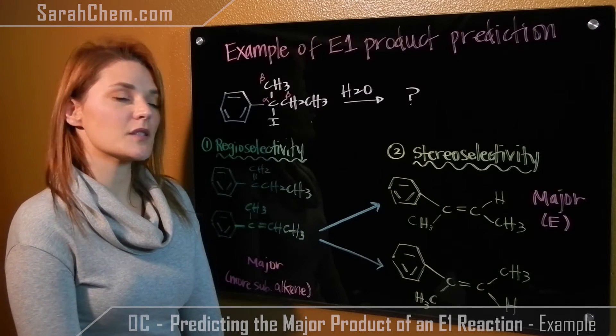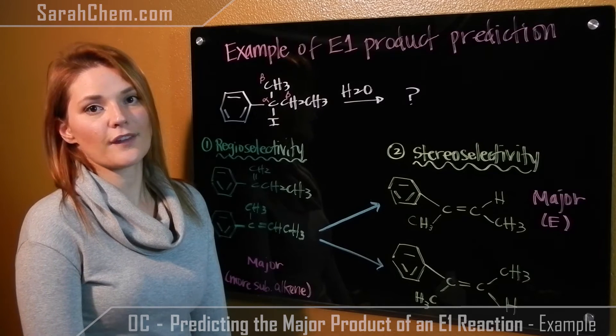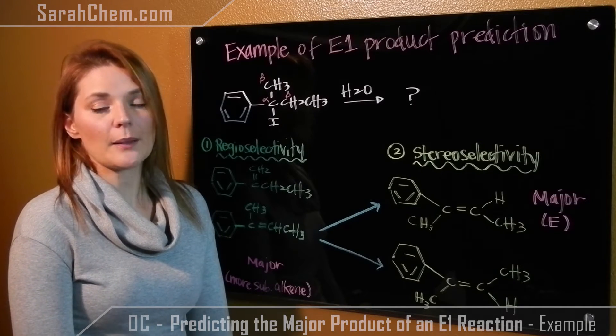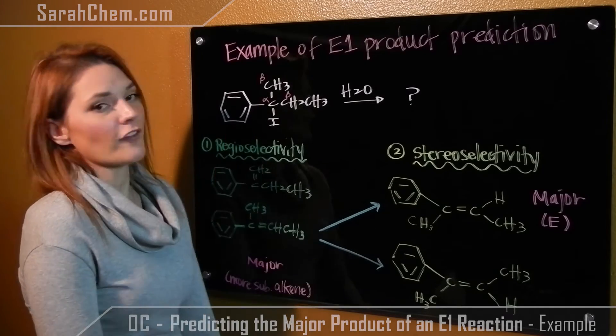So if we take a look at this reaction that we're given, the first thing you want to do is verify that it is in fact an E1 reaction. Remember, E1s will happen for tertiary, benzylic, or allylic alkyl halides. In this case here, we have benzylic.